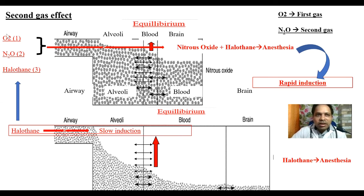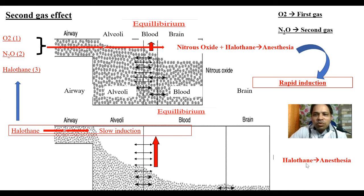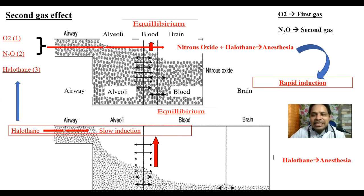When you administer nitrous oxide, it is always given with 100 percent oxygen to prevent diffusion hypoxia — which we'll deal with in the next topic. Here, oxygen becomes the first gas and nitrous oxide becomes the second gas. Since nitrous oxide is taking halothane along with it as a carrier, the induction of halothane also becomes faster. So nitrous oxide with halothane causes rapid induction; whereas if you gave halothane alone, it would cause slow induction. This concept is called the second gas effect.